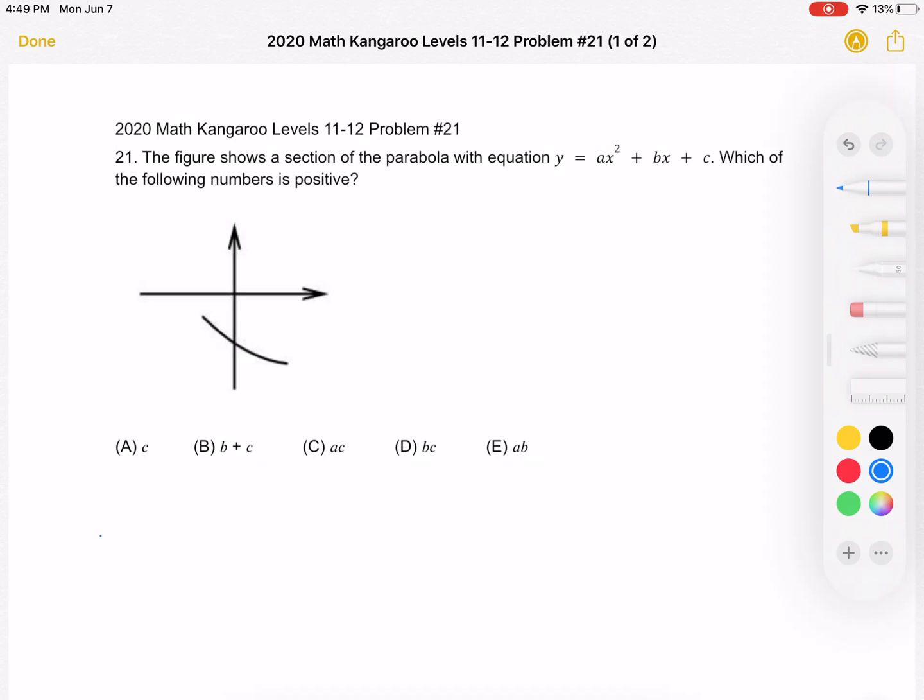The figure shows a section of the parabola with equation y equals ax squared plus bx plus c. Which of the following numbers is positive?